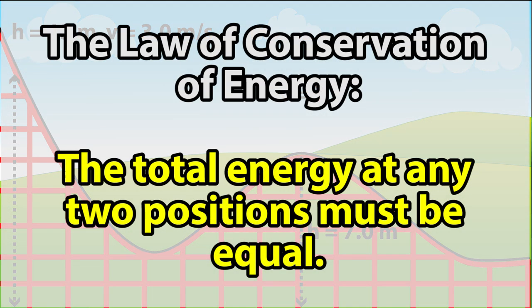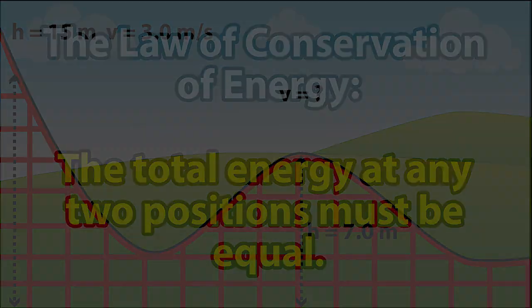Now the key to any of these conservation of energy problems is that the total energy at any two points on the movement of the object is going to be equal. So we can figure out the total energy at those two points, we can make them equal to each other in an equation and we can go through and solve.